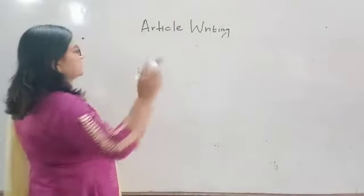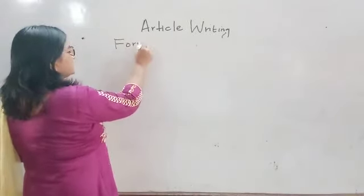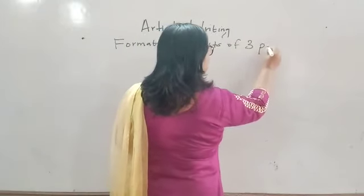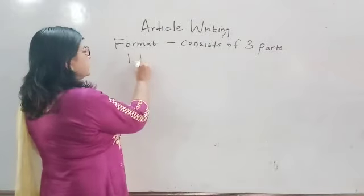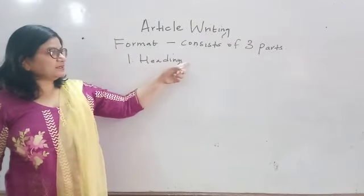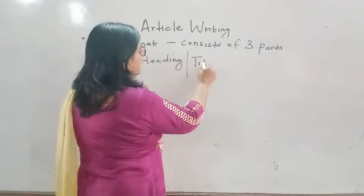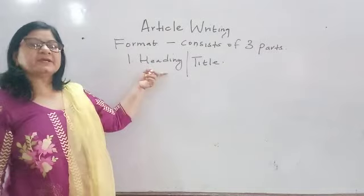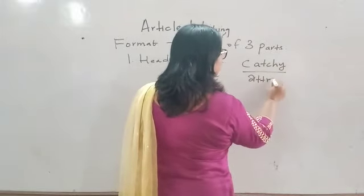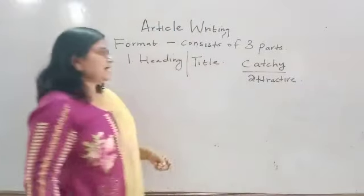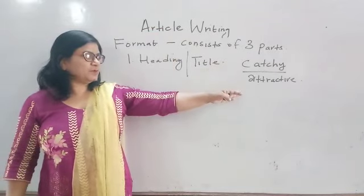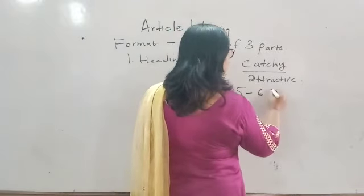Now I will tell you about the format of article writing. It consists of three parts. The first part is the heading — here you have to write the heading, or we can say the title. It should be catchy, by catchy I mean attractive, and it should not be more than 5 to 6 words. Always write the heading very short.